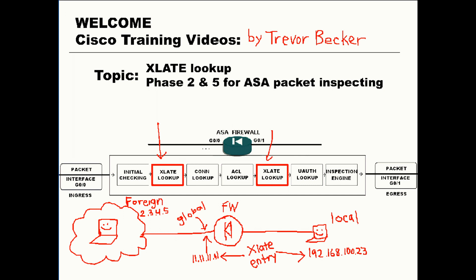For outbound connections, which are initiated from the inside going out, the local address is being used to build that connection entry. For inbound connections, which go from outside in, the exact opposite happens. All connections and access list operations must look at that global address, so that's why it needs to happen in phase five — after the ACL lookup and the connection lookup phase.